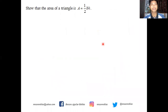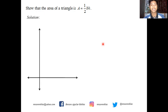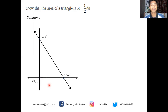Our task is to show that the area of a triangle is one half times the product of the base and the height. To do this, we draw the Cartesian coordinate system and call out points: (0,0), (b,0), and (0,h). From these points we draw a line passing through (0,h) and (b,0), and we now see a triangle bounded by this line, the x-axis (y=0), and the y-axis (x=0). This triangle has a base equal to b and an altitude equal to h.